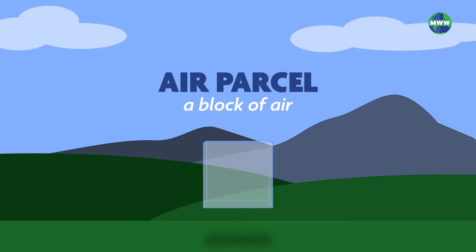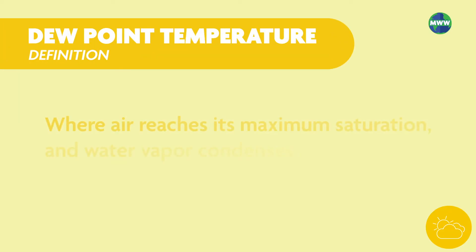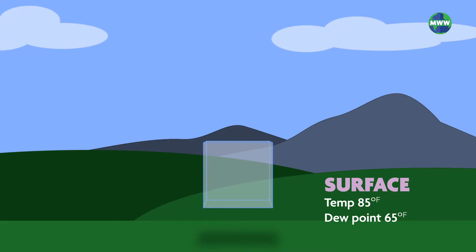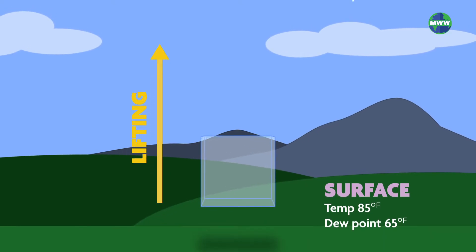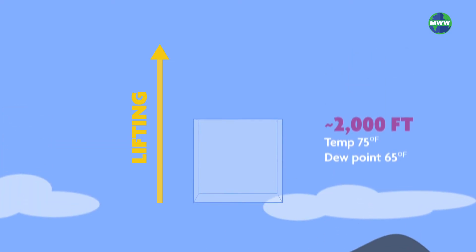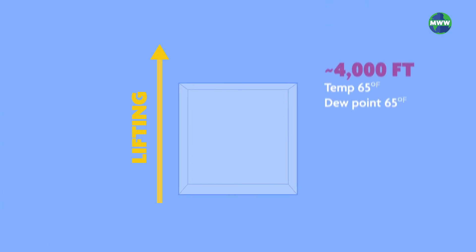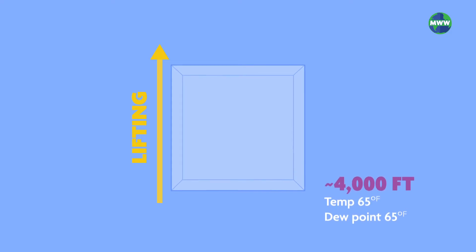Clouds form when a parcel of air or block of air cools to the dew point temperature. The dew point is where the air reaches its maximum saturation and water vapor condenses or changes its state from a gas into a liquid. The most common way that air can reach this point of saturation is through lifting. The parcel rises, cools, and expands. The rate that the air parcel cools with increasing elevation is called the lapse rate.